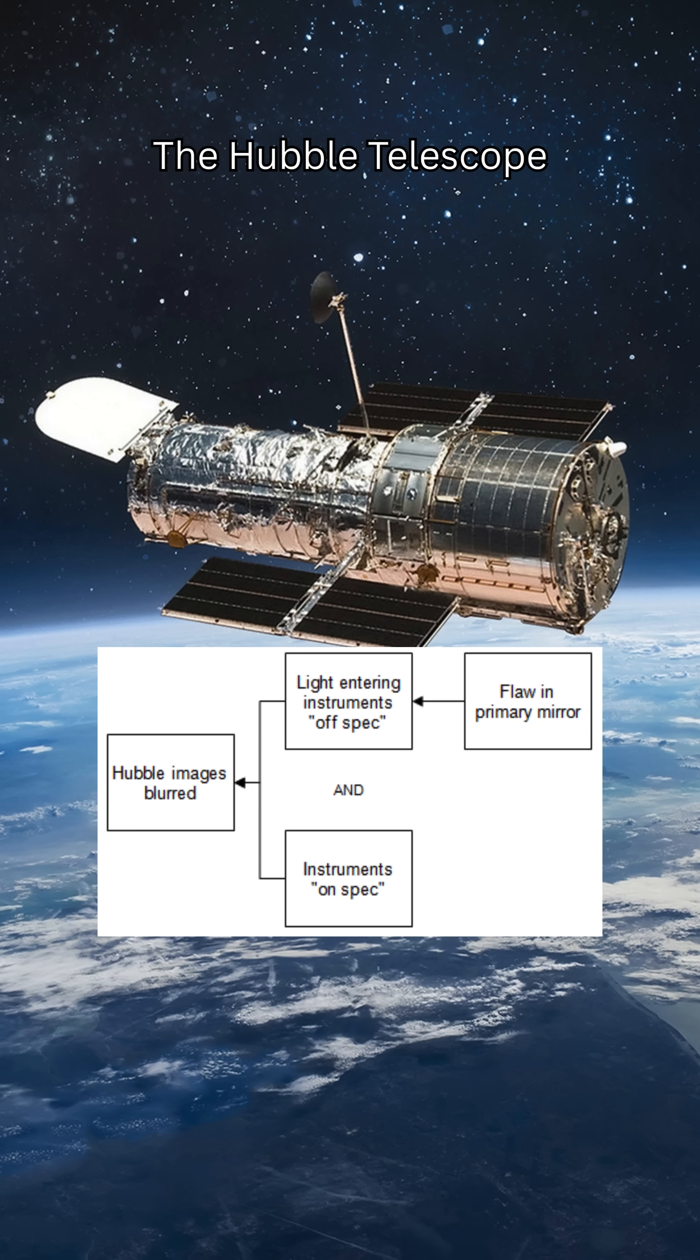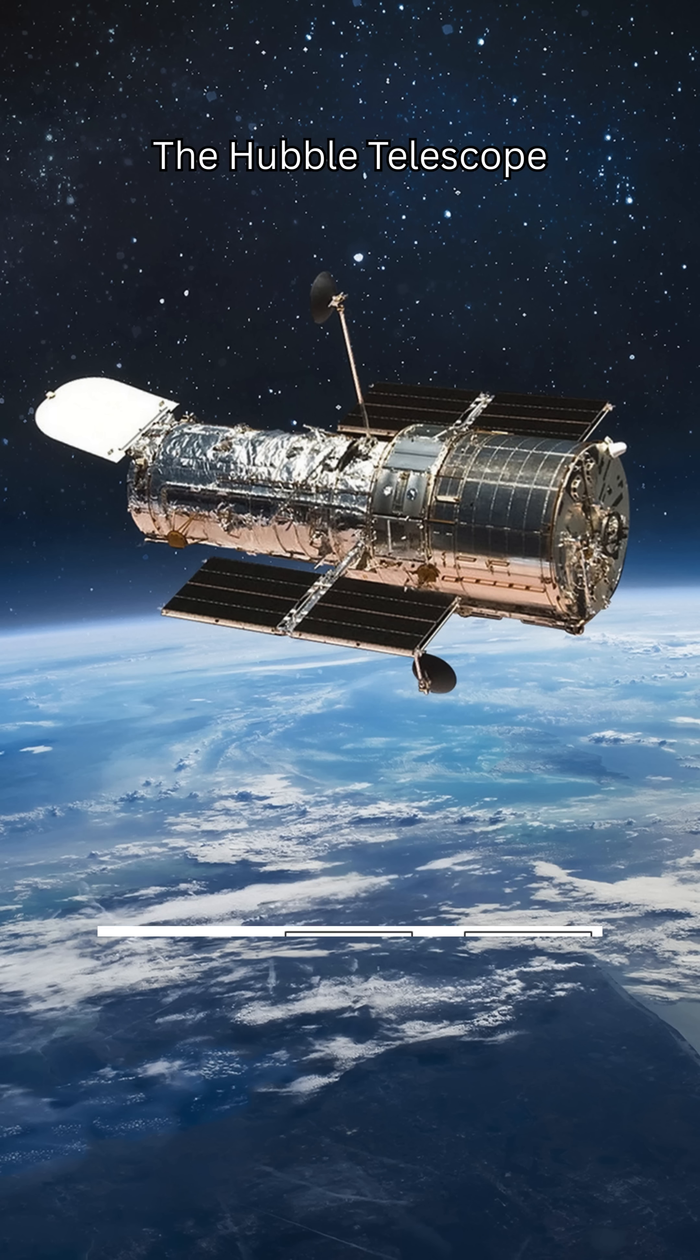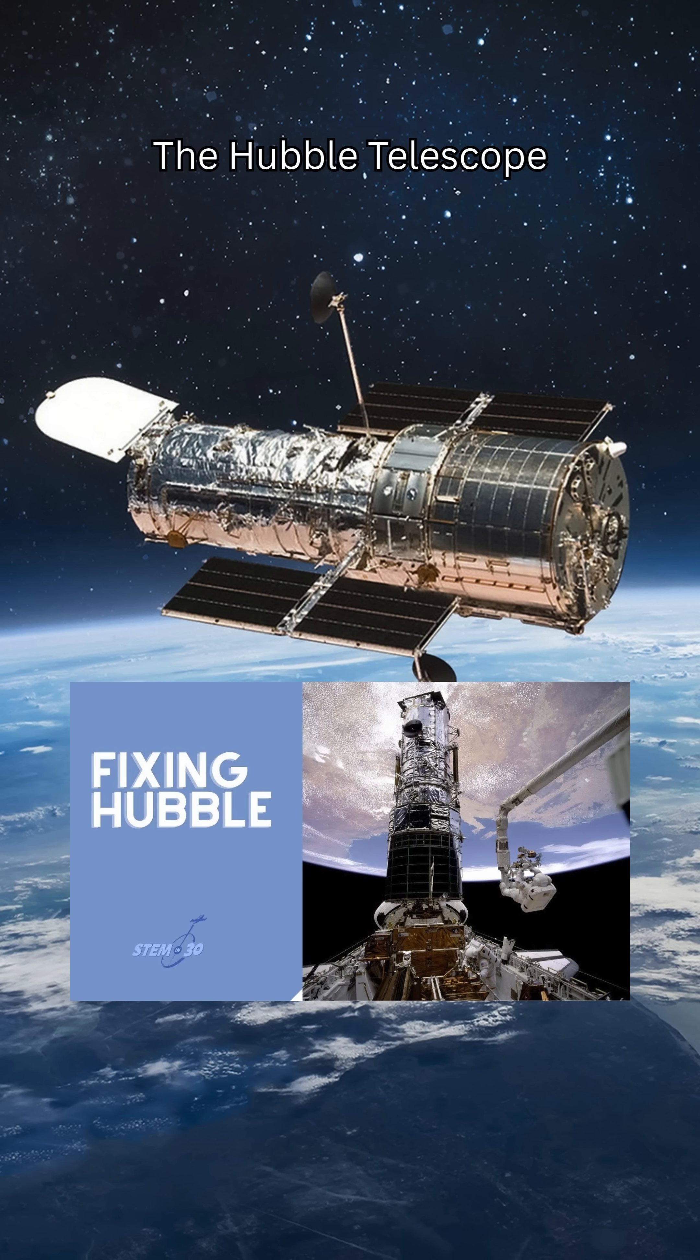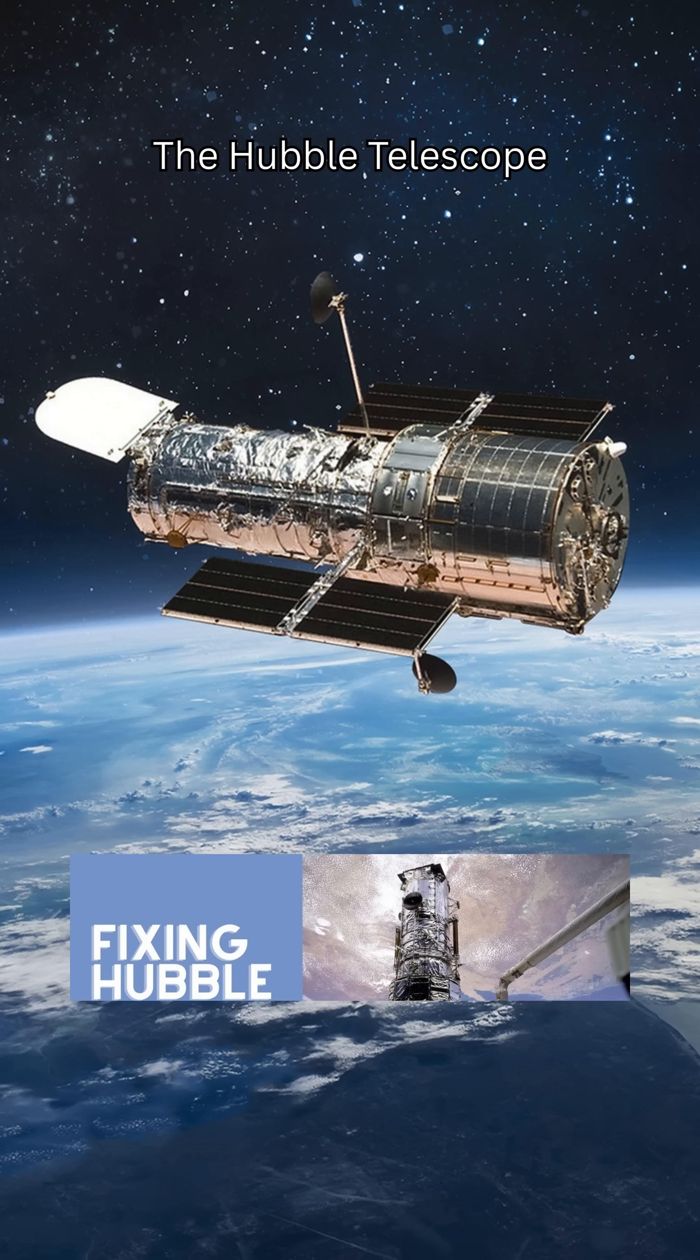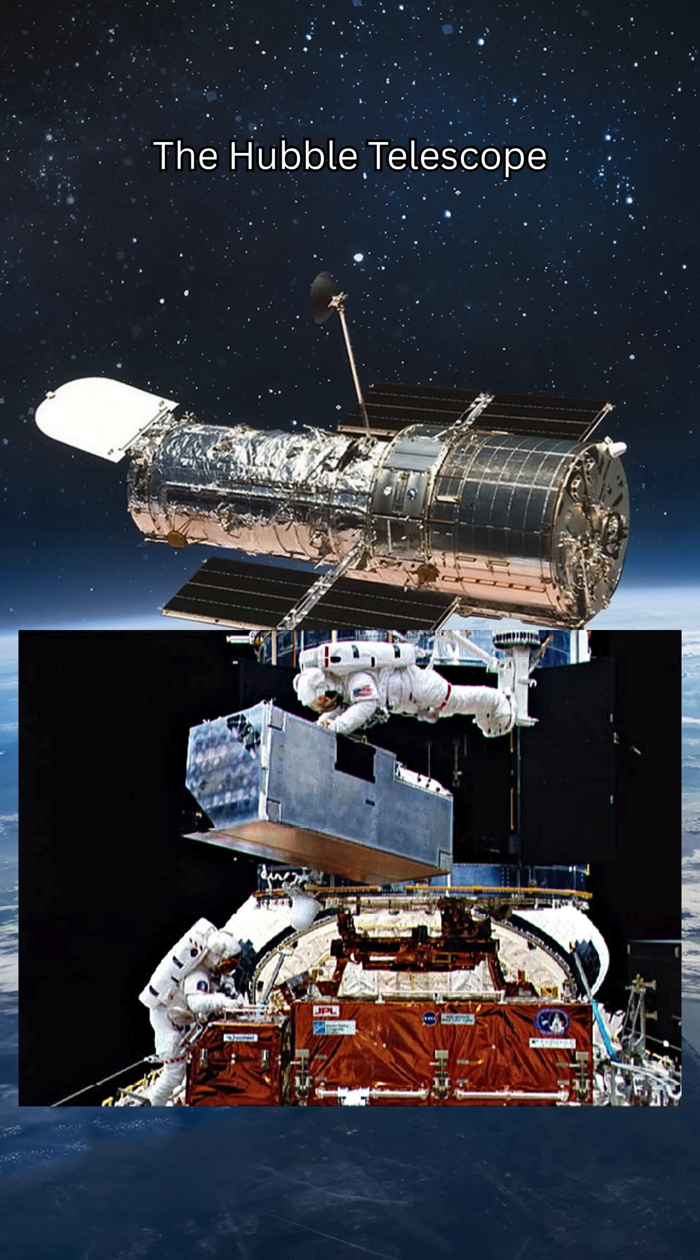Hubble couldn't take a single clear picture. Headlines called it the $1.5 billion mistake. So NASA pulled off one of the craziest repair missions in history. Astronauts literally installed space glasses on Hubble.